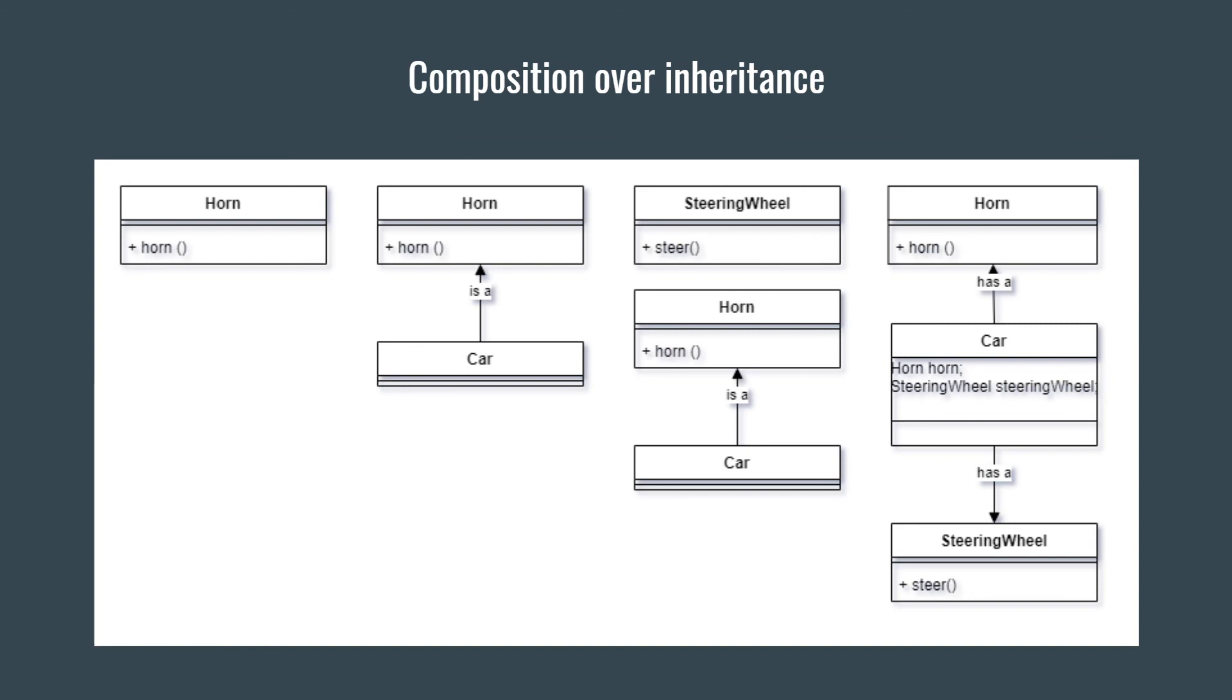I got to this point a few times when using inheritance. The answer is obvious, we switch to composition. It's a lot more simple if your car has a horn and a steering wheel instead of trying to be a horn and a steering wheel.